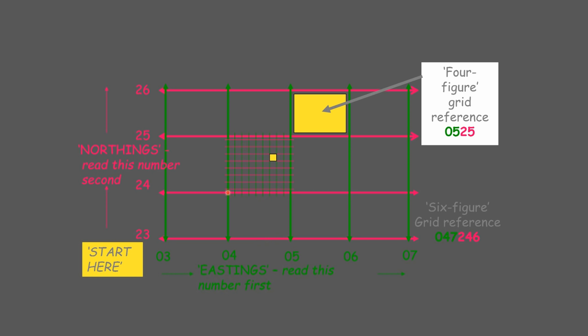And then we work our way up. 24 1 2 3 4. Well I started a bit wrong. 5 6. There we go. I should have started 1 from here. So it would be 047 246.